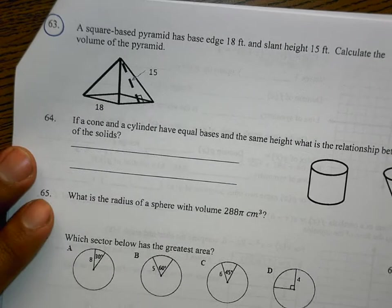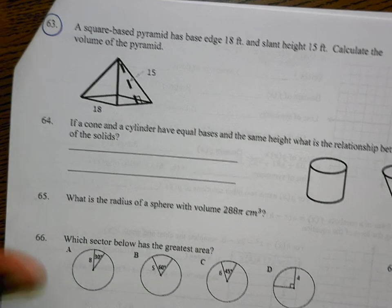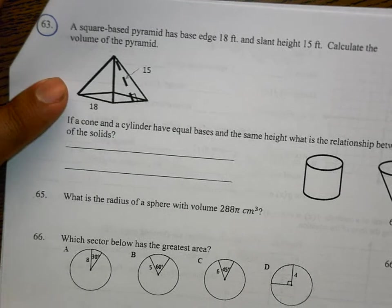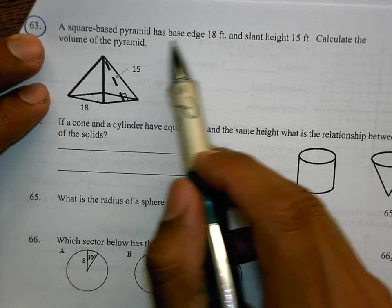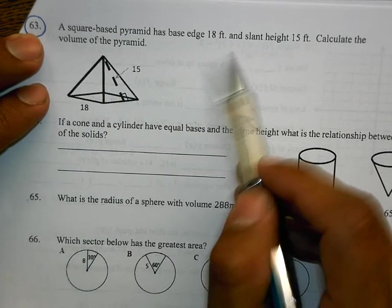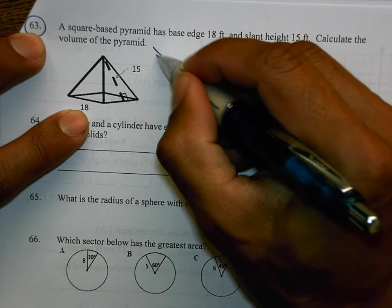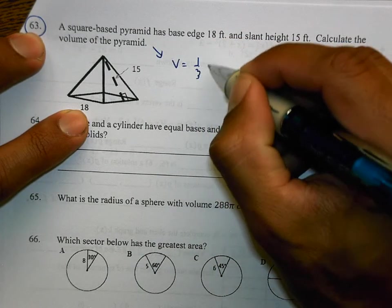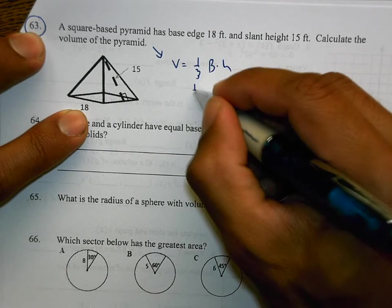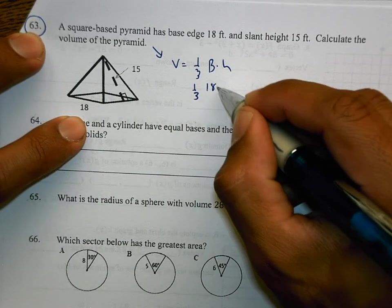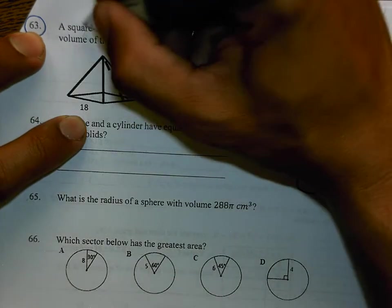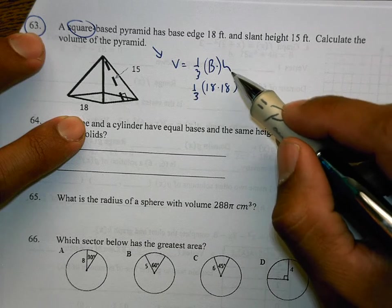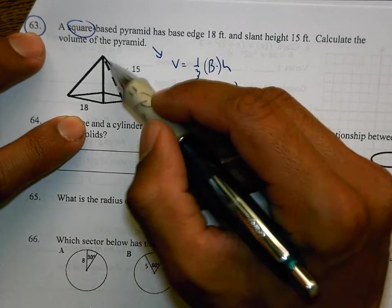The other two that I have chosen for us to do is 63 on the other side. The reason why I chose this one is because it deals with a pyramid and it also deals with a slant height. The way they tried to trick you: a square-based pyramid has a base edge of 18 and a slant height of 15. Calculate the volume of the pyramid. Volume of a pyramid is one-third the area of the base times the height. The area of the base is 18 times 18. That's what this big B is because it's a square.